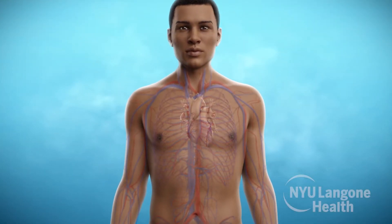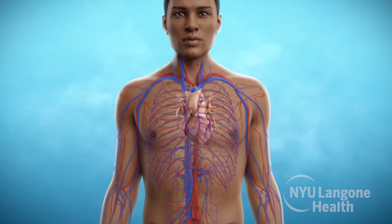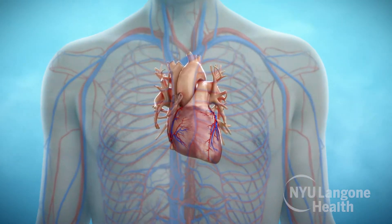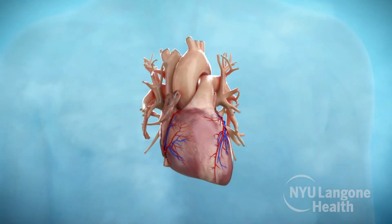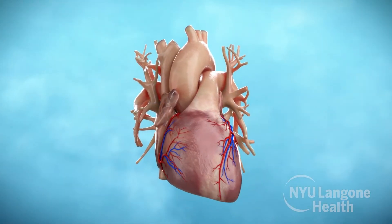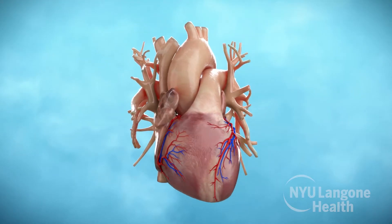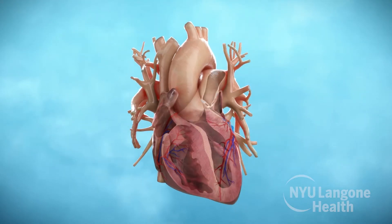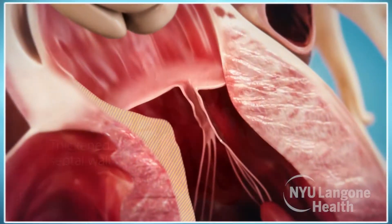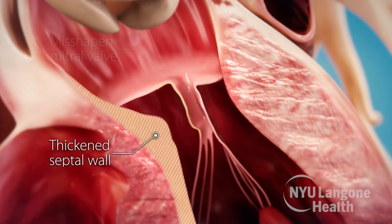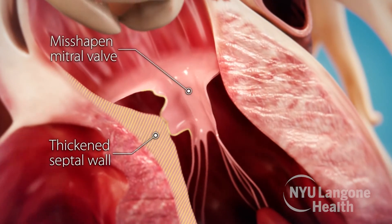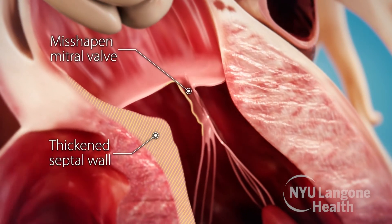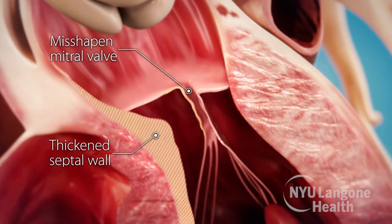Obstructive hypertrophic cardiomyopathy is caused by structures in the heart that block the normal flow of blood. These obstructions force the heart to work harder to move blood through the body. A thickened septal wall and a misshapen mitral valve are two common causes of obstruction in people with HCM.